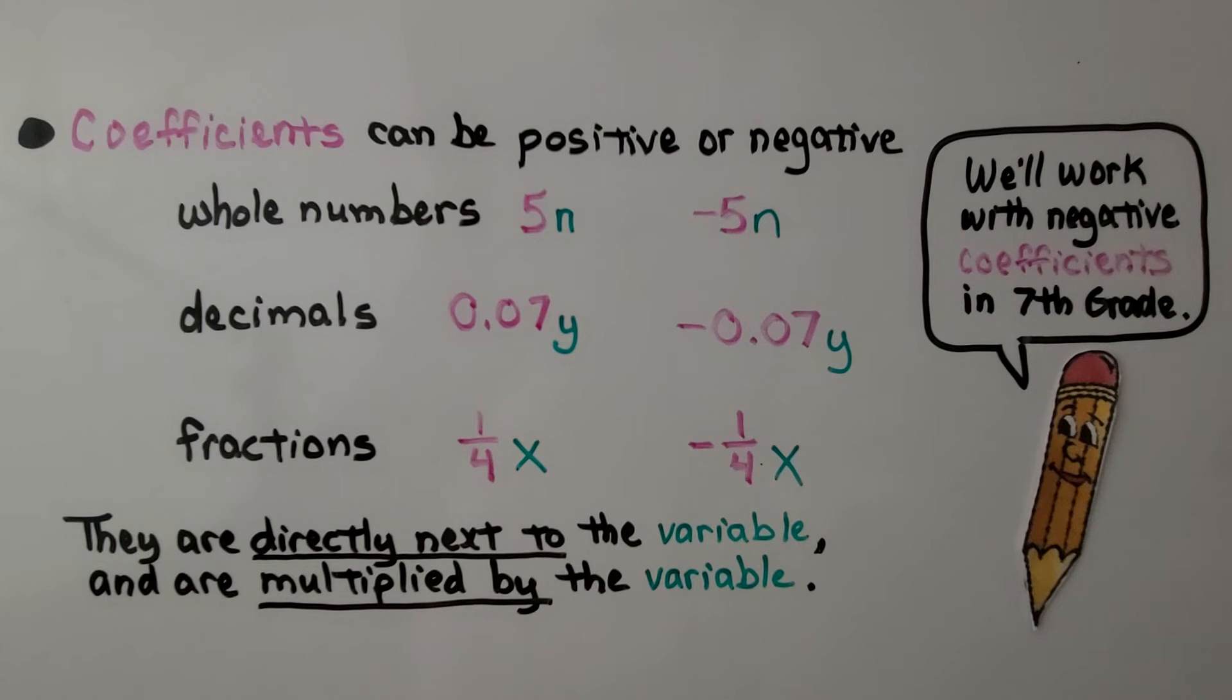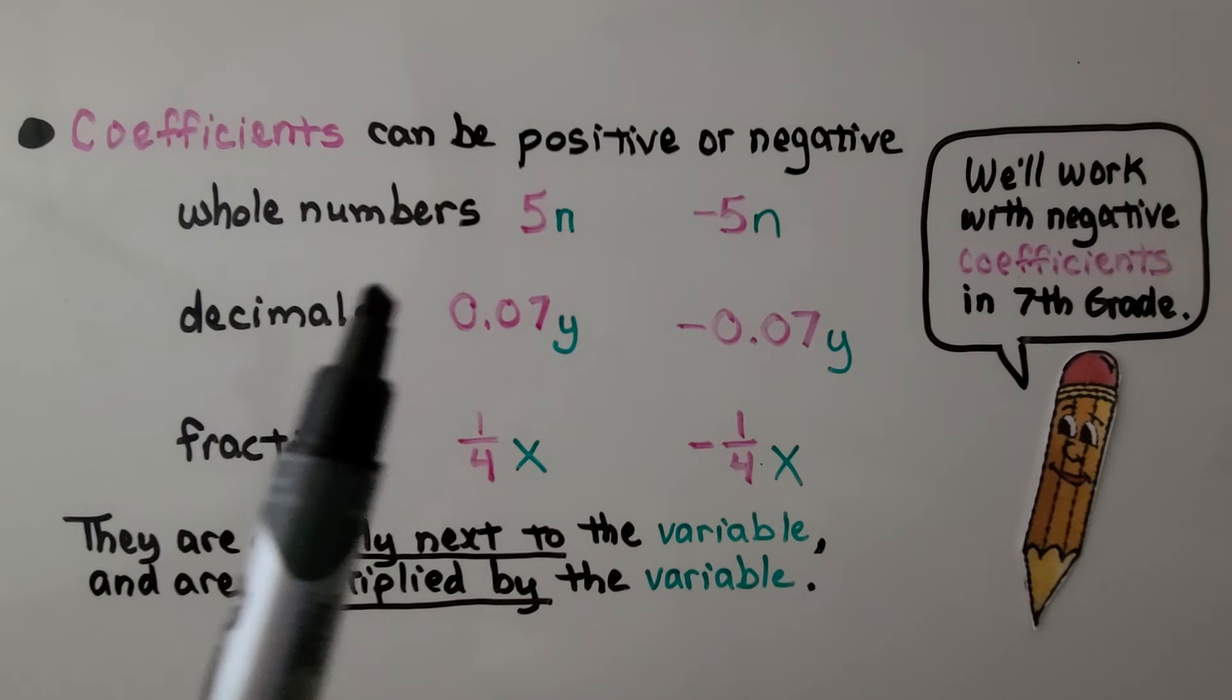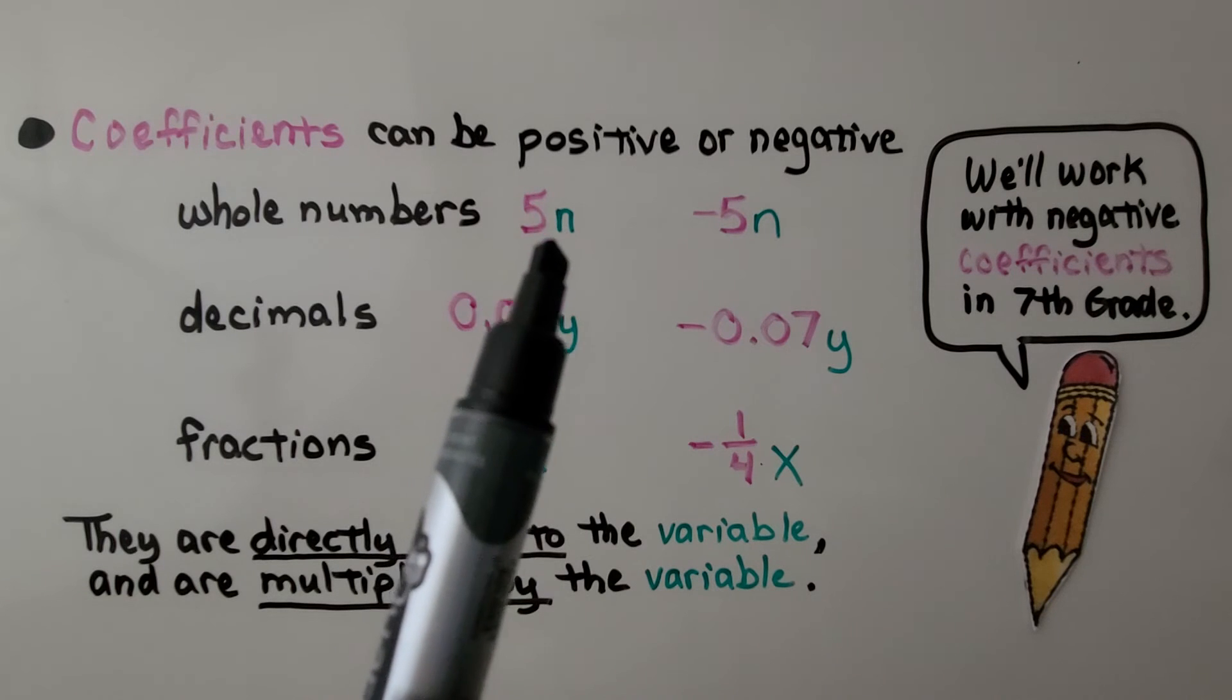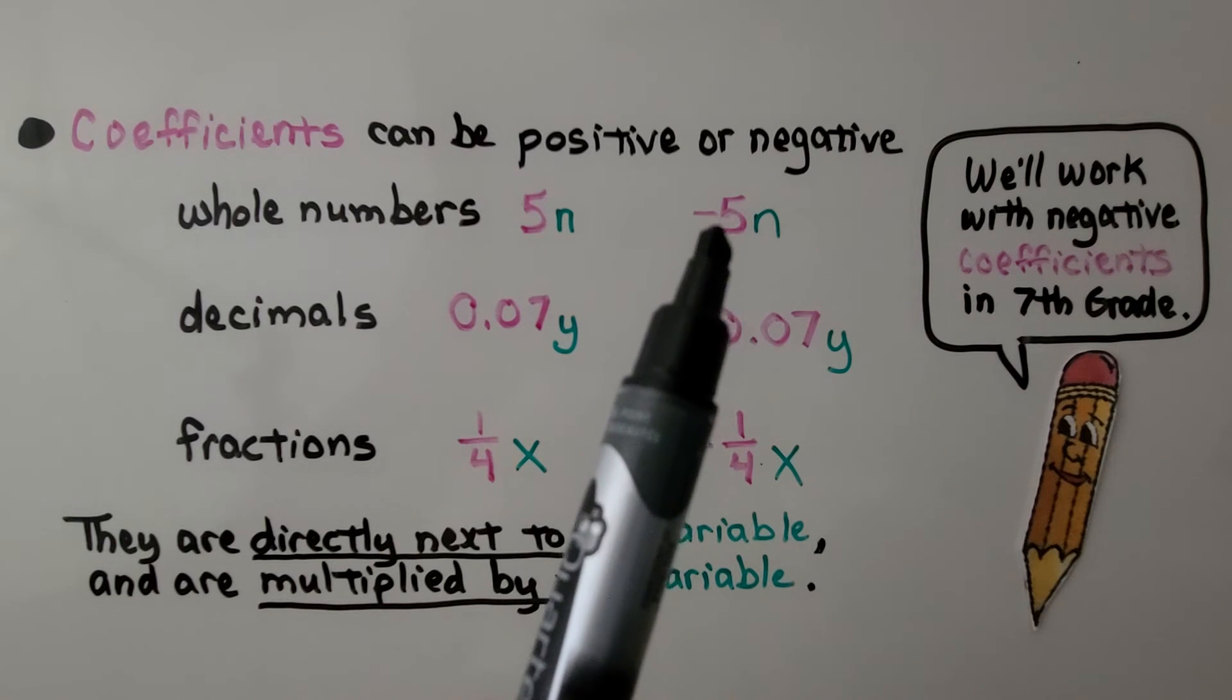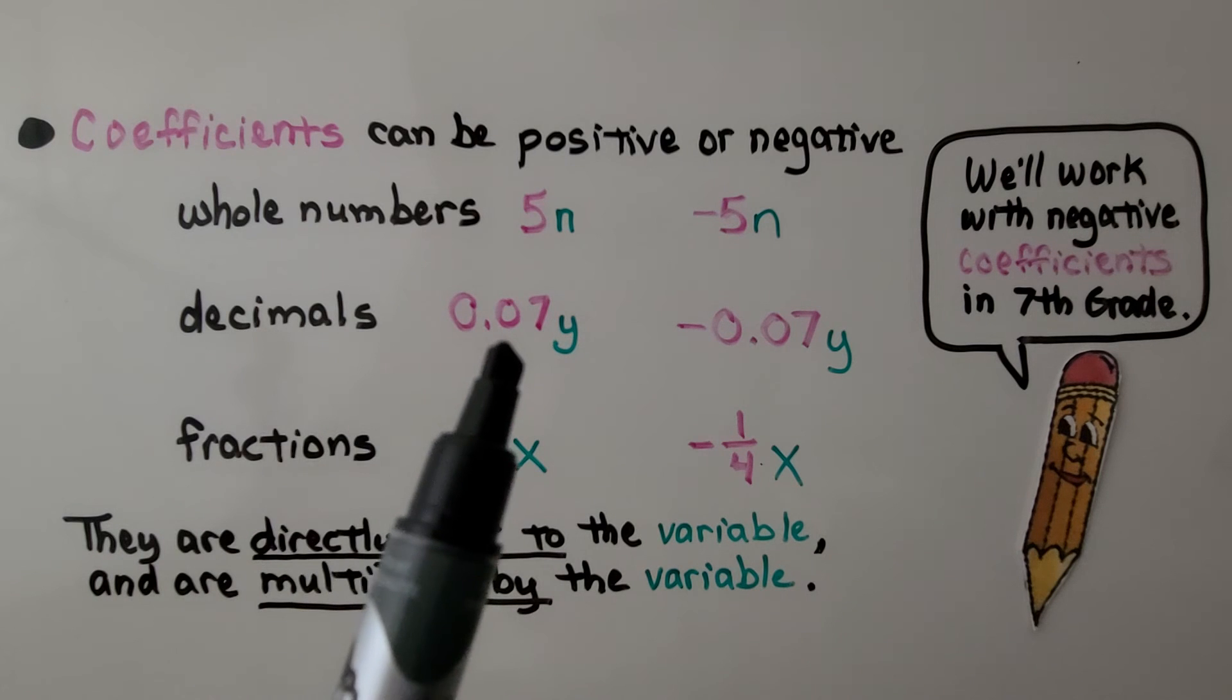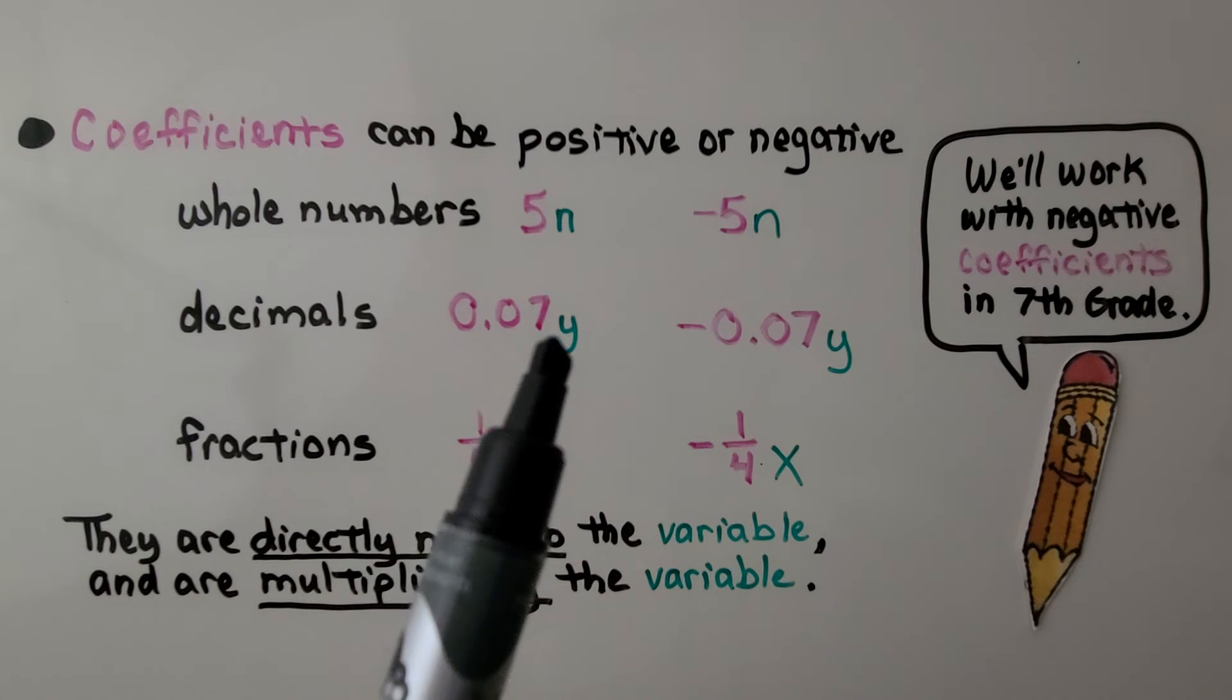Coefficients can be positive or negative. They can be positive or negative whole numbers. Like here we have 5 as our coefficient. We have 5n. Here we have a negative 5n. They could be positive or negative decimals. Here we have 7 hundredths times y. Here we have negative 7 hundredths times y.